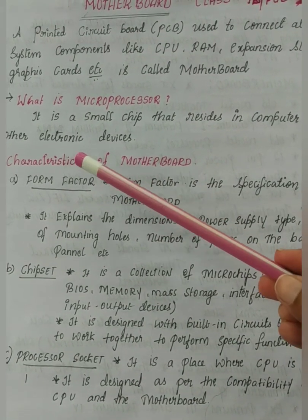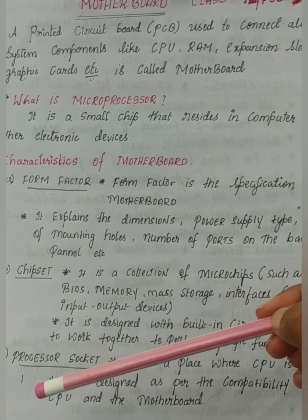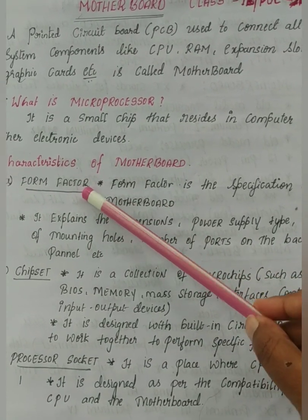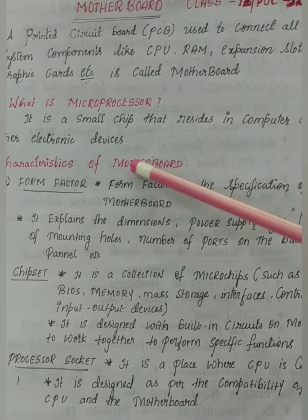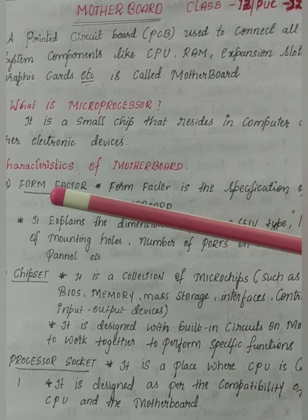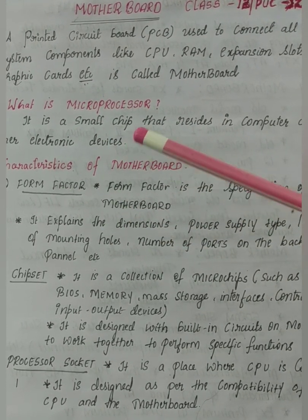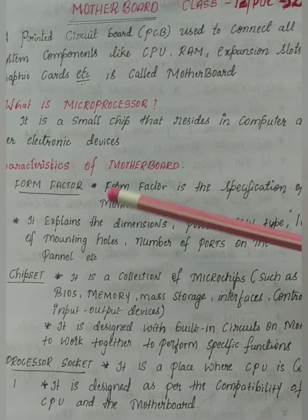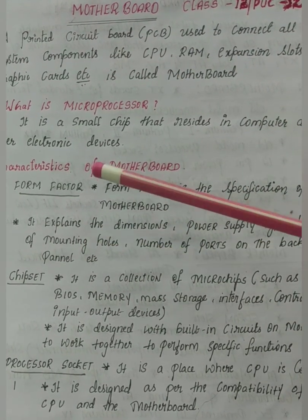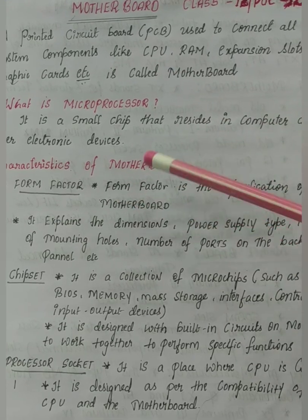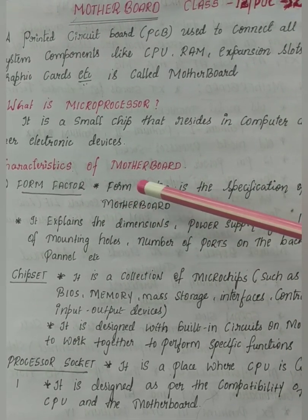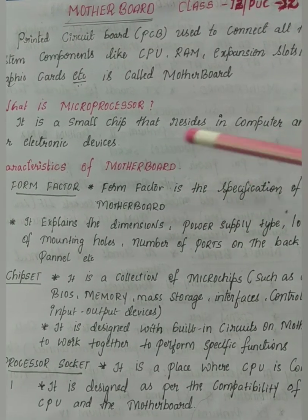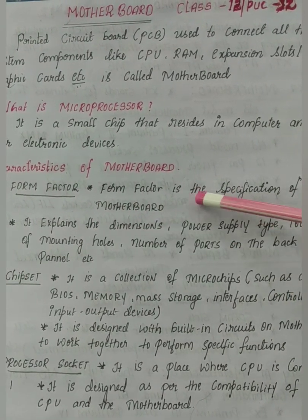Now, the characteristics of the motherboard — there are three: the first is form factor, the second is chipset, and the third is processor socket. Form factor defines the complete concept of the motherboard — the shape of the motherboard, and what components should be present in it. That's why form factor is called the specification of the motherboard; it defines the complete structure of the motherboard.